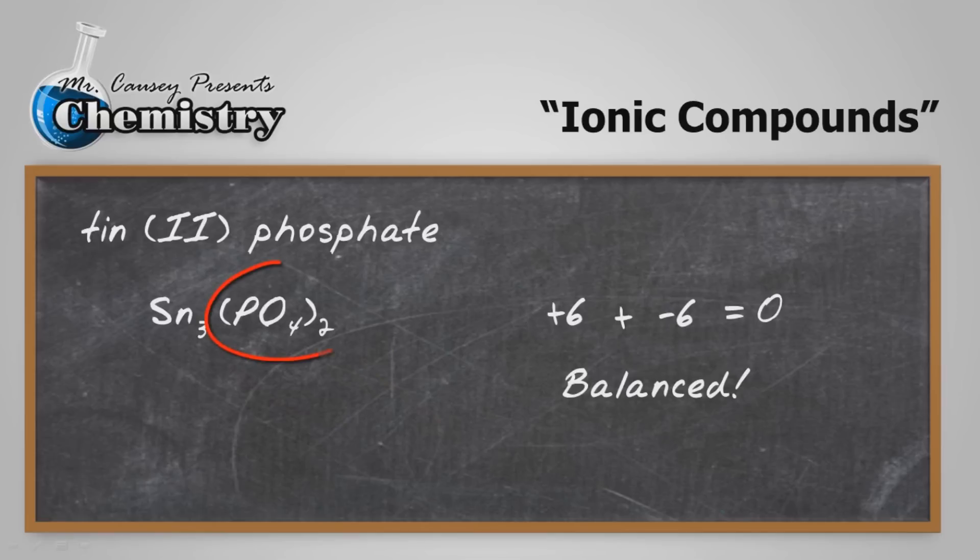And I want you to note that I use parentheses there around the phosphate ion, because phosphate acts as a unit. And we want two phosphates, not just two phosphorous, and not two oxygen. We want two phosphates. Here is a common mistake. People will use parentheses around elements. You only need to use parentheses around polyatomic ions.